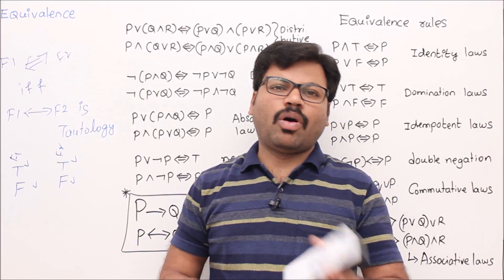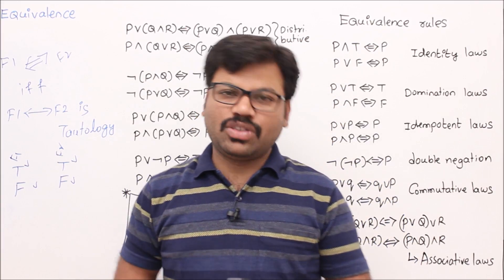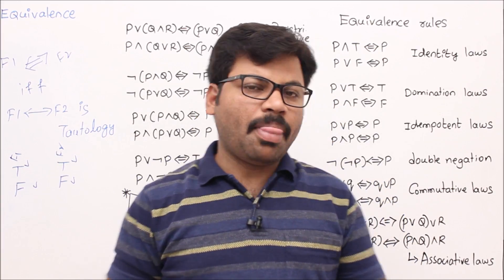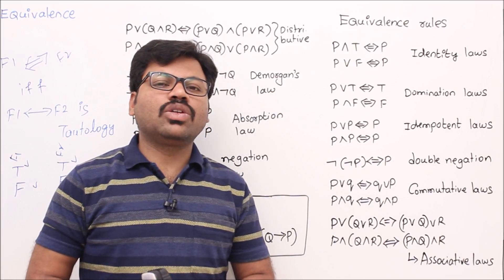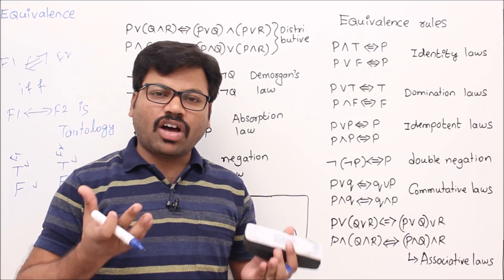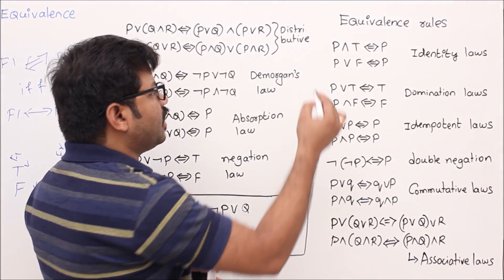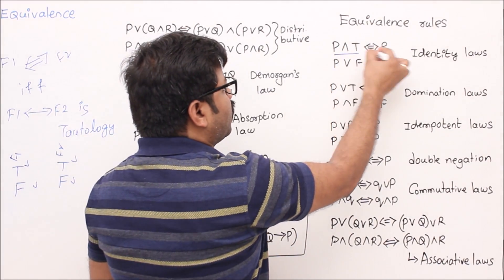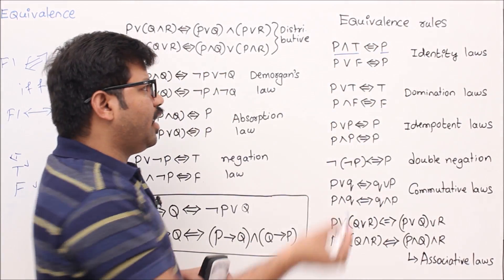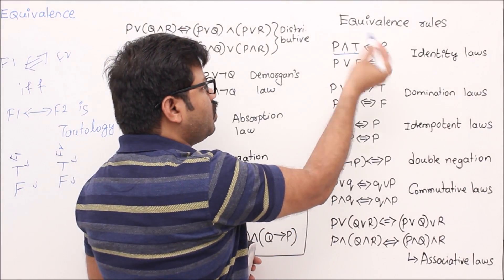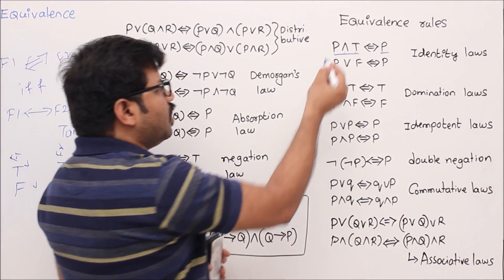Some of the equivalences which are very popular and very useful have been made into rules. Let's see some of the equivalence rules. Equivalence rules are nothing but formulas which are equivalent. The first example: on the left side we have the formula p∧true, and on the right side just p.